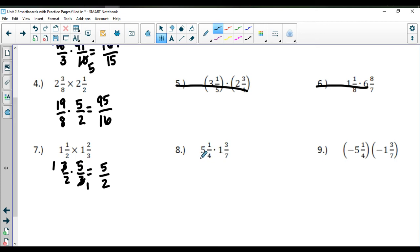Question number 8 then. 4 times 5, 21 fourths. And 7 times 1, 10 sevenths. And I'm going to reduce with the 7 and the 21. And the 4 and the 10 have common factors of 2. So 3 times 5 is 15. 2 times 1 is 2.